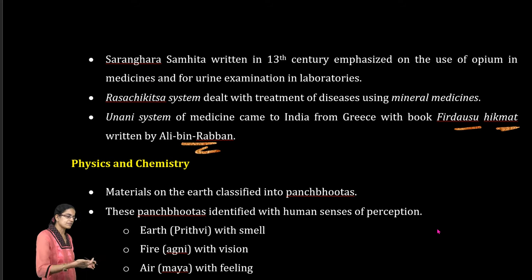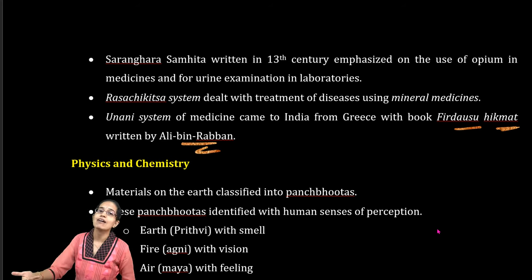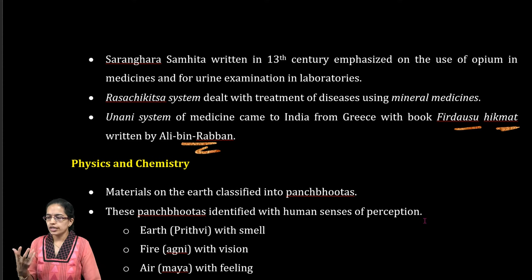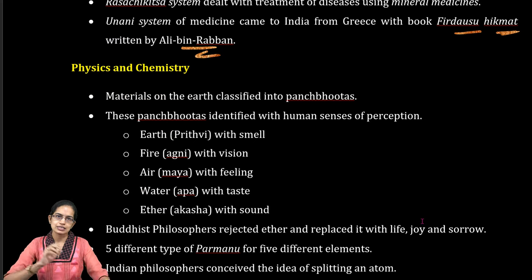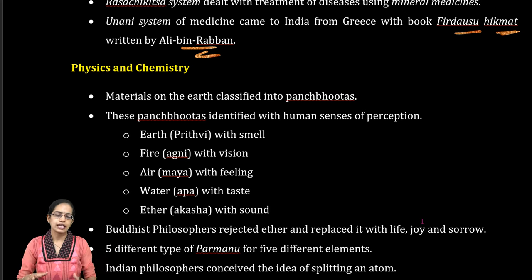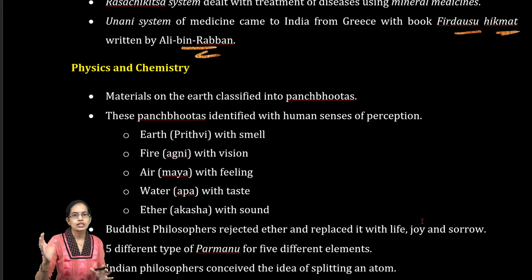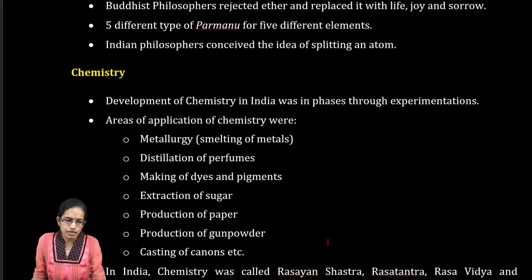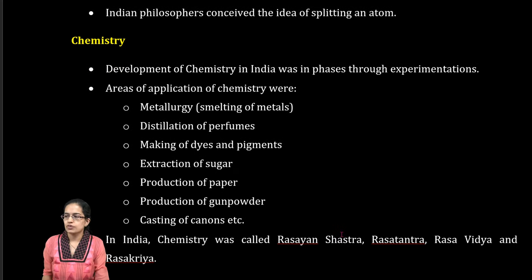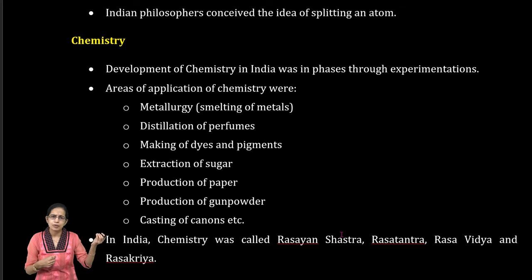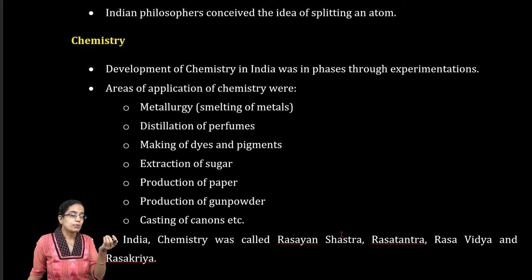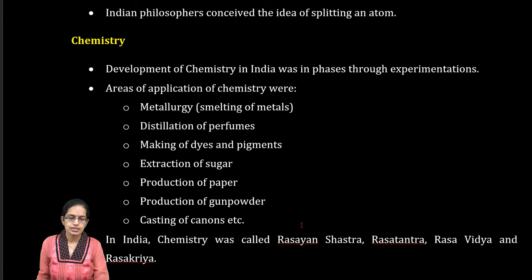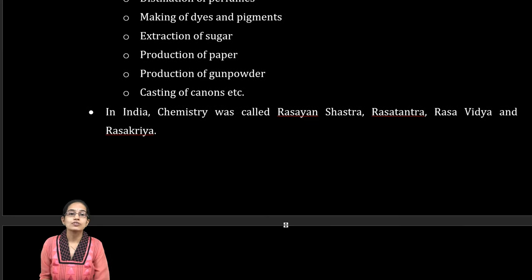Similar developments occurred in physics and chemistry. In physics, the Panch Mahabhut describes five materials the earth is made of: earth with smell, fire with vision, air with feeling, water with taste, and ether (Akash) with sound. These five paramanus are considered the basic elements for survival. In chemistry, Nagarjuna's developments were important, including distillation of perfumes, making of pigments, dyes, colors, metallurgy, production of paper, and gunpowder used in military. Rasayan Vidya and Rasayan Shastra were very important fields.